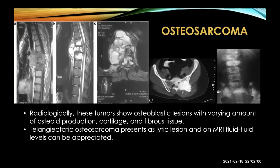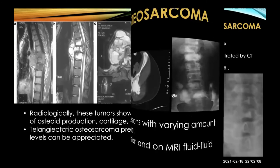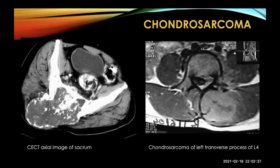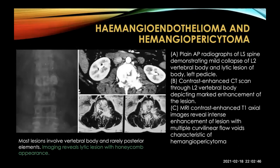Osteosarcoma is a very aggressive tumor that usually involves the posterior elements but can occur anywhere in the vertebral body. Telangiectatic osteosarcoma presents as a lytic lesion, and on MRI fluid-fluid levels can be appreciated. Chondrosarcoma is also aggressive; imaging shows lytic destruction with chondroid matrix, sometimes with a ring-and-arc pattern. It usually arises from the posterior element. On MRI, lobular enhancing mass arising from the lamina compresses and displaces the cord. Examples include chondrosarcoma at the axial sacrum and chondrosarcoma of the left transverse process of L4. Hemangioendothelioma and hemangiopericytoma are also aggressive tumors showing a honeycomb appearance.